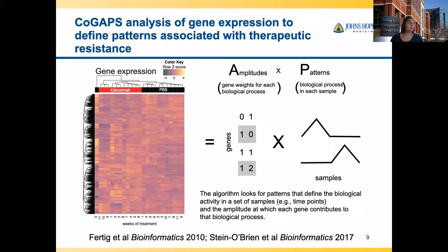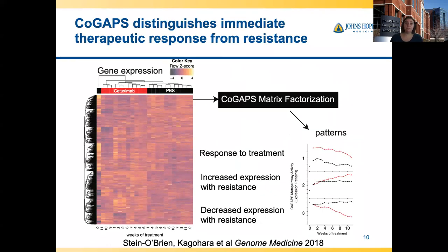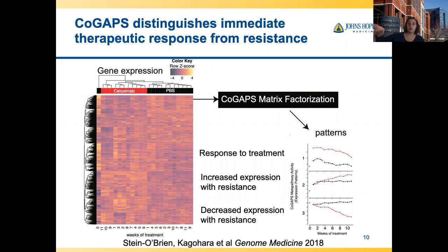When we go back to our resistance data and apply this matrix factorization approach, we observe three dominant patterns: one relatively constant and higher in treatment — consistent with clustering results — and two new features: a slow increase of expression with resistance and a decreased expression with resistance. We're now able to tease apart the dynamic changes in our cells that are actually related to the phenotype, as opposed to just presence of the treatment.